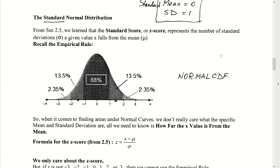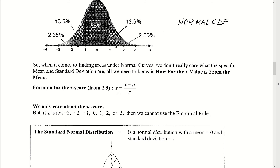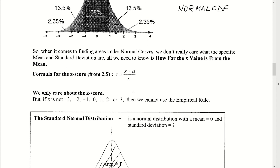We've worked with this curve before when we did the empirical rule. The empirical rule states that 68% of the data lies within one standard deviation of the mean, 95% within two standard deviations, and 99.7% within three standard deviations. The z-score formula — x minus the mean divided by the standard deviation — allowed us to find percentages under the curve. We're now going to extend those concepts to include fractional z-scores as well.